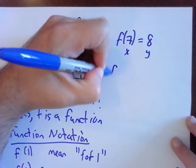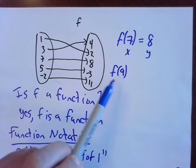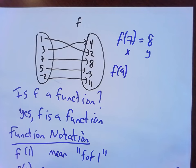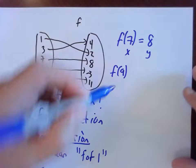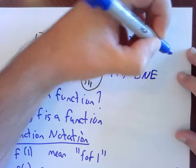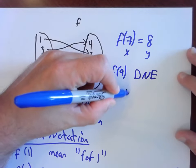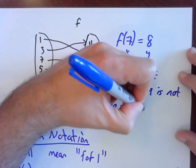What if I asked for f of 9? You look at the picture and think, well, there's no 9. Every input has to have an output, so if I've got an input and I don't know what the output is, that must mean this is not one of the inputs. We can't do this. So f of 9 does not exist — we abbreviate that D.N.E. Why? Because 9 is not in the domain. It's not one of the allowed inputs.